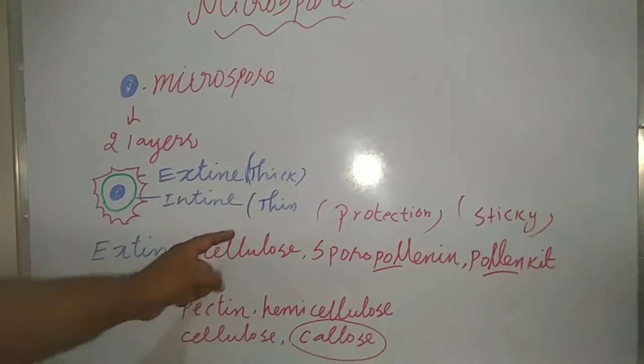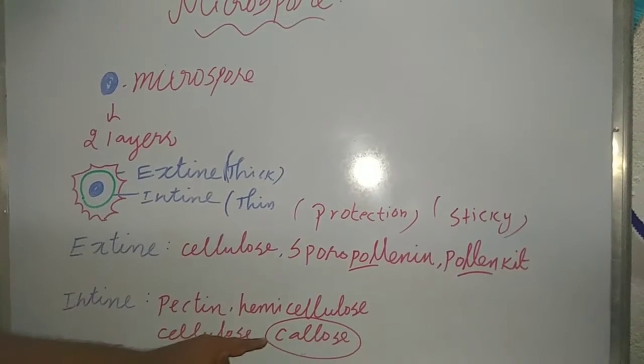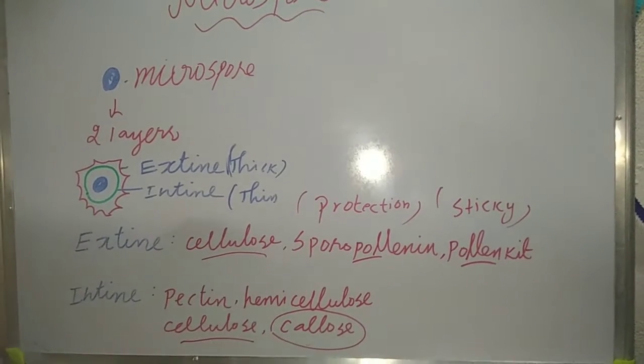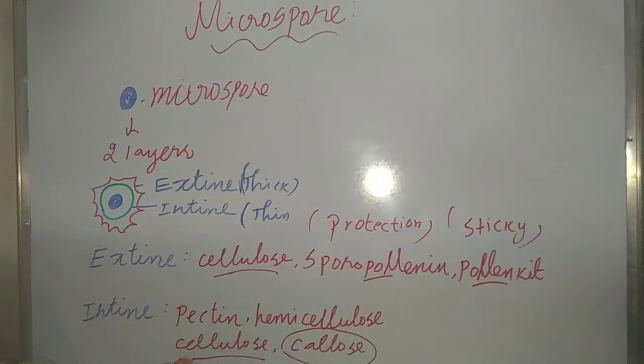Maybe a NEET question: which chemical component is present in both? Exine and intine both have one component only, that is cellulose. Here also cellulose, this is also cellulose. You know cellulose for plants, made up of cellulose.